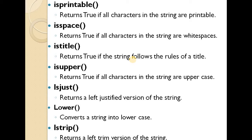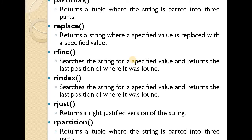ljust — returns a left-justified version of the string. lower — converts a string into lowercase. lstrip — returns a left-trimmed version of the string. partition — returns a tuple where the string is parted into three parts.